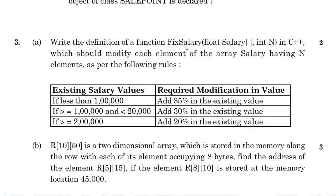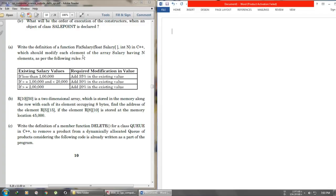We have to define the function and this function will take two arguments. The first argument is an array named 'salary' and the other is an integer named 'n'. What this will do is just modify each element of the array salary having n elements, as per the following criteria given to us. This function is just modifying data — it is not returning any value, so we'll use 'void' here.